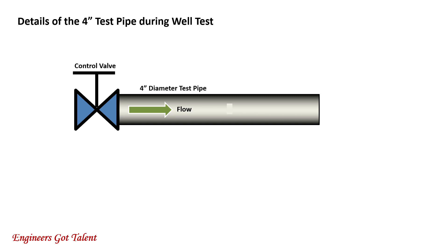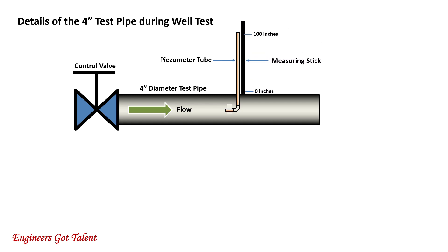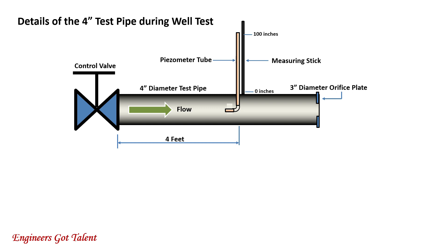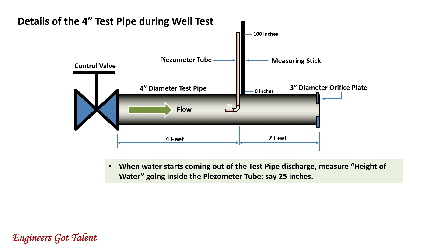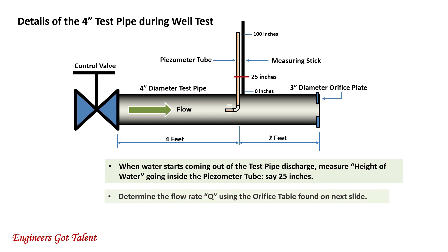These are the details of the 4-inch test pipe during well testing. Water flows inside the pipe and is controlled by a control valve. A piezometer tube is installed inside the pipe approximately at the pipe center. A measuring stick measures the height of the water at the piezometer tube. A 3-inch diameter orifice plate is installed at the end of the pipe to restrict the flow so as to attain a water height at the piezometer. The distance of the piezometer tube to the control valve is 4 feet, while the orifice plate is 2 feet from the piezometer tube, so the ratio is 2/3 to 1/3. When the water starts coming out of the test pipe discharge, you measure the height of the water going inside the piezometer tube, say 25 inches.